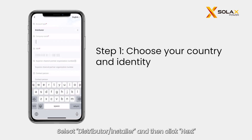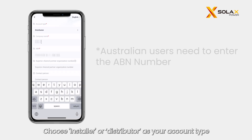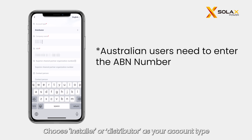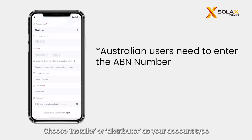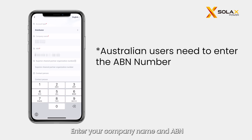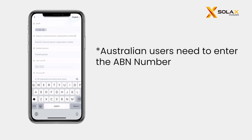Select Distributor/Installer and then click Next. Choose Installer or Distributor as your account type. Enter your company name and ABN according to your region.